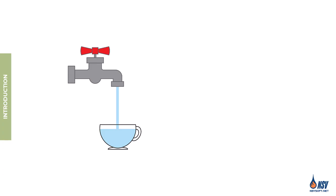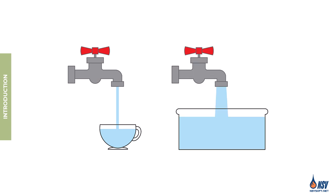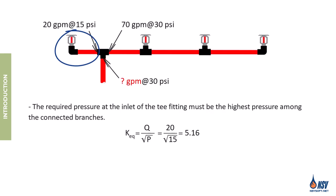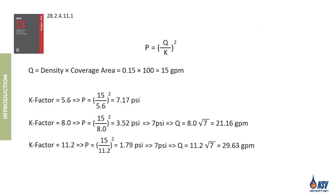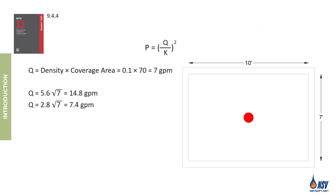To fill a small cup we open the faucet only a little, while for a large container we open it completely. This simple action represents controlling the flow rate — in other words, adjusting the faucet's K factor. In this video we'll explain what the K factor is and how it affects hydraulic calculations and overall performance in sprinkler systems.